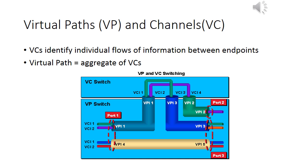Virtual connections are of two types: Virtual Path Connections identified by VPI, and Virtual Channel Connections identified by a combination of VPI and VCI. A virtual path is a bundle of virtual channels. The figure shows an example of switching based on VPI and VCI values. Because all VCIs and VPIs have only local significance across a particular link, these values get remapped as necessary at each switch.